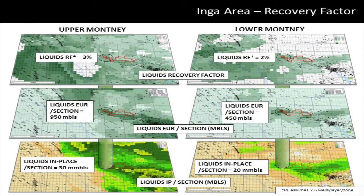By dividing the resultant EUR per section maps by the in-place maps we can back-calculate recovery factor. For example, taking a section in the middle of our map frame at Inga: in the upper Montney we interpreted an in-place number of 30 million barrels, a liquids EUR per section of 950,000 barrels, giving a recovery estimate of about 3% for liquids. For the same section in the lower Montney, we interpreted 20 million barrels of liquids in place, a liquids EUR per section of 450,000 barrels, and a calculated recovery of about 2% for liquids. So for each section we have a description of in-place, EUR, and recovery factor for both gas and liquids in both the upper and lower Montney zones.